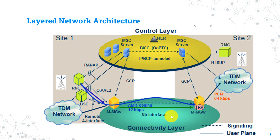Looking at the network picture from the left, you will find external networks called TDM networks like PSTN, connected to MSC servers for signaling and control purposes, and connected to the media gateway for user plane purposes. That means if there is a connection with external networks, the signaling messages transfer will be done via the MSC server and the TDM network itself, while the user plane traffic transfer will be done via the connection between the media gateway and the TDM network.